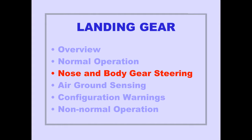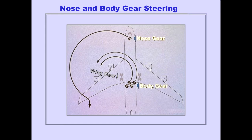Let's now discuss nose and body gear steering. Airplane steering is provided by both the nose and body gear. The body gear turns in the opposite direction of the nose gear to provide a smaller turning radius and reduce tire scrubbing.